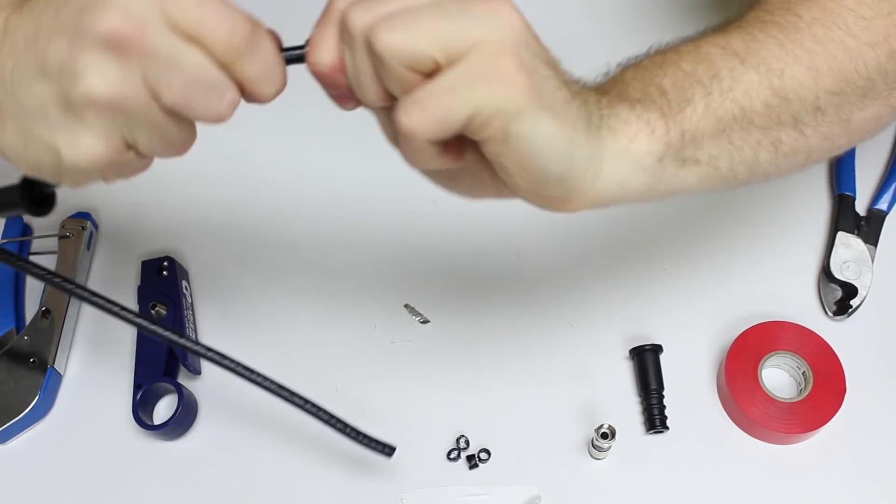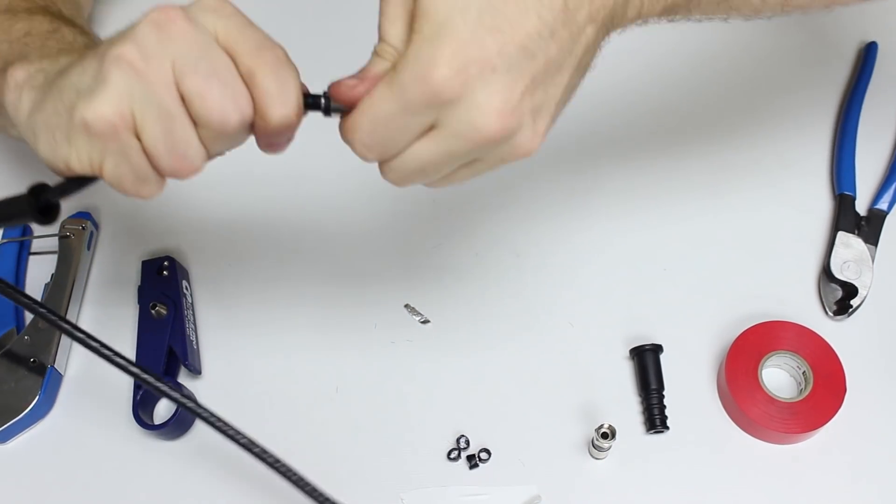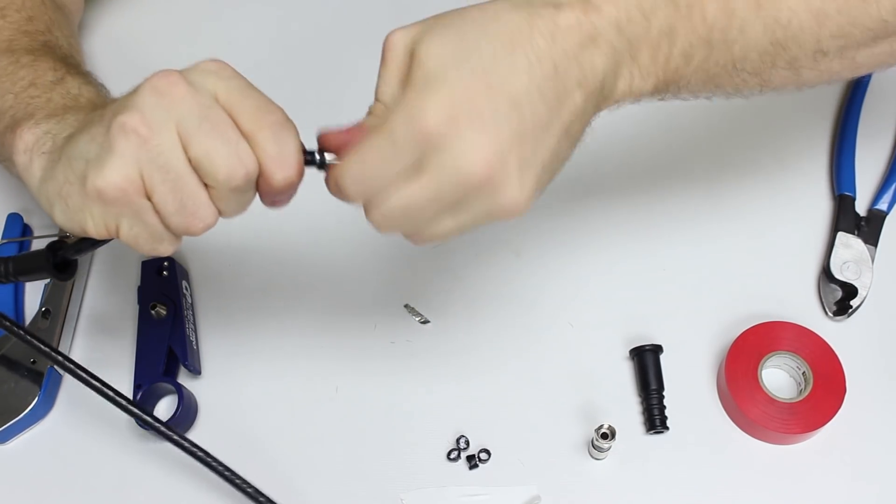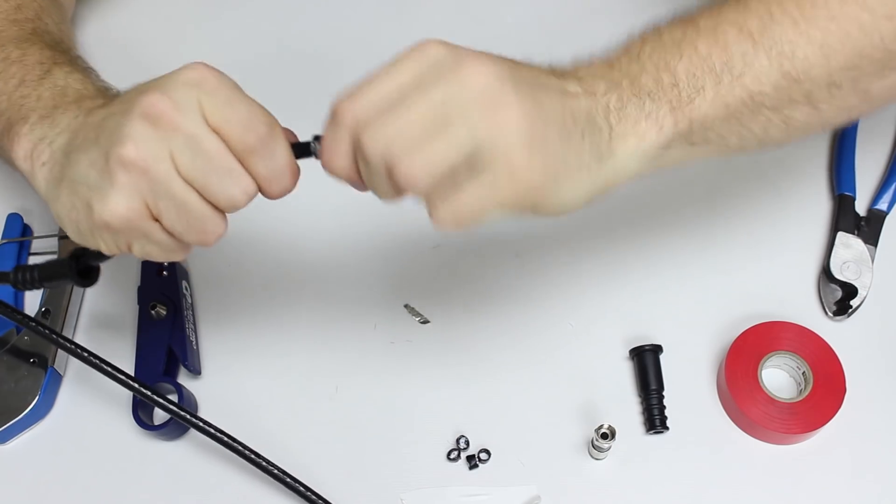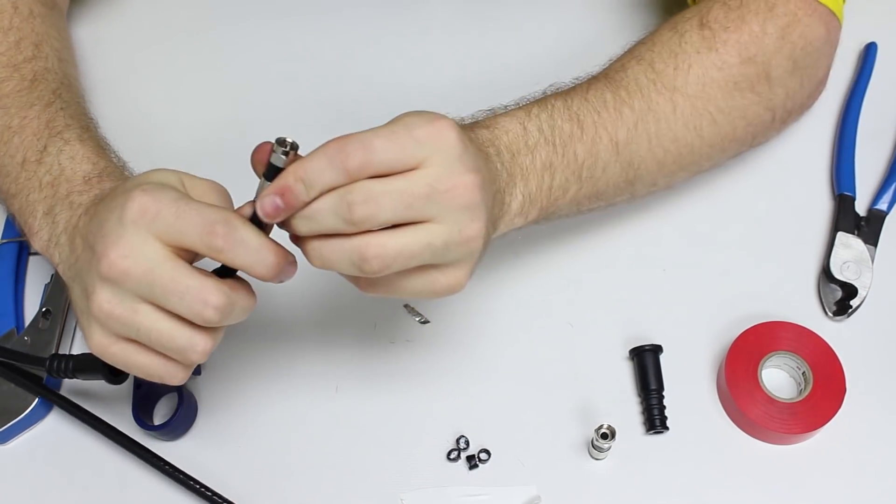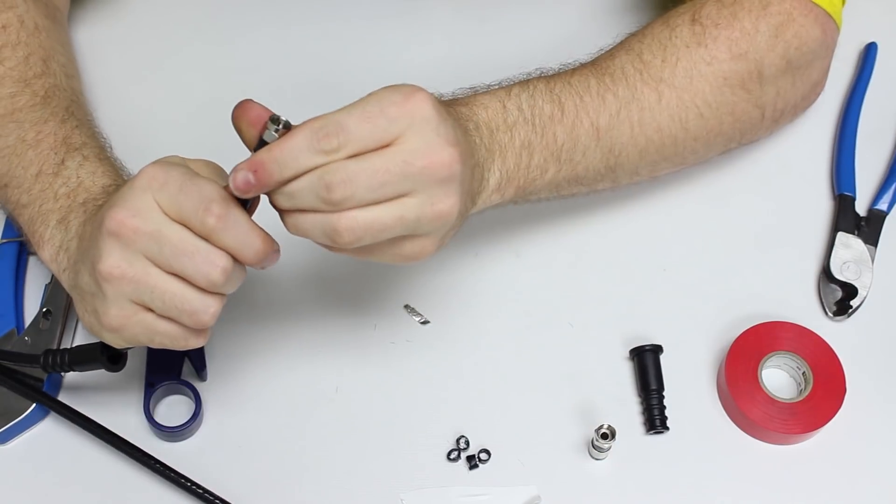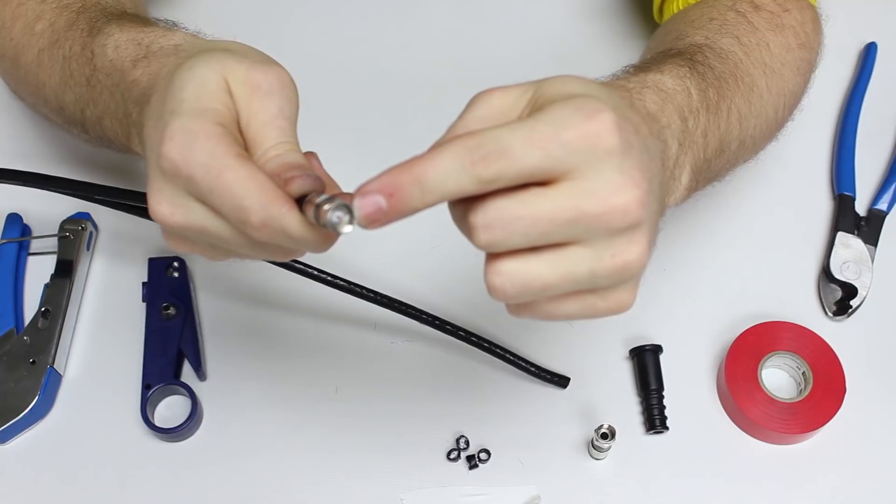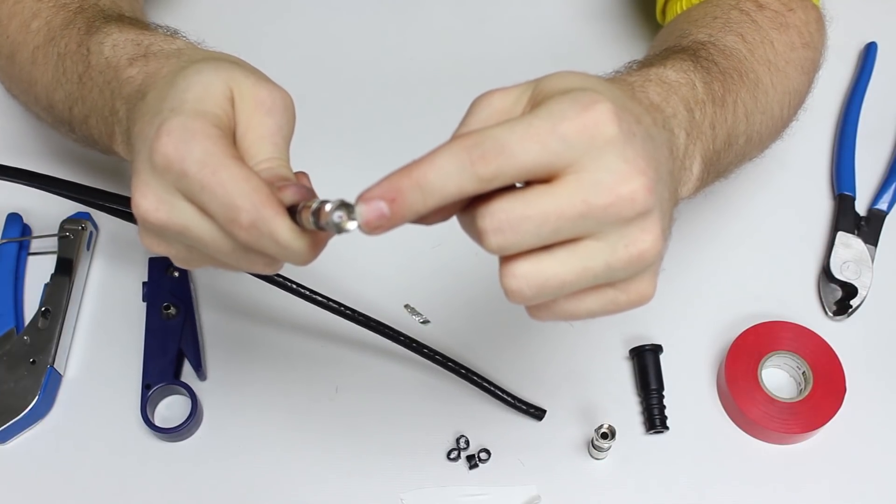You just give it a slight little work to make sure to not over push. But it simply slides right on with almost no effort at all. And when it's in position you'll see that the actual dielectric, your white center is actually flush with the inside connector.